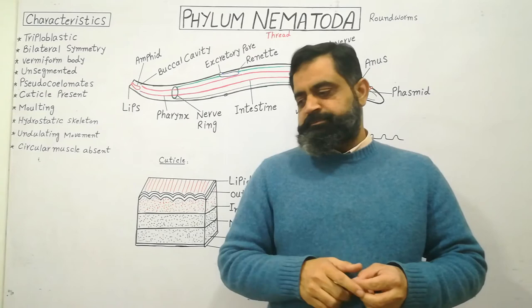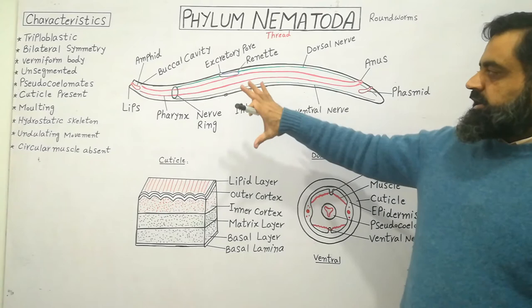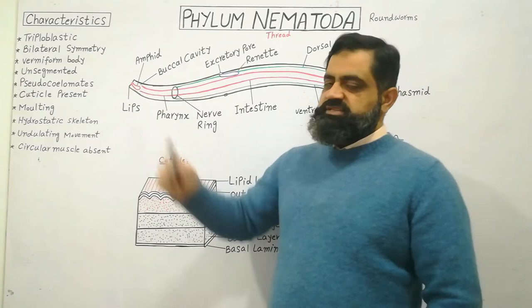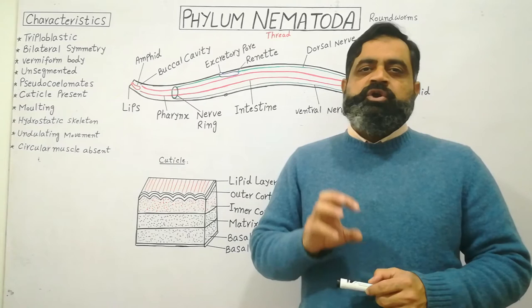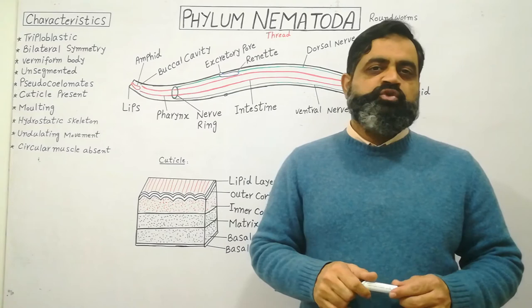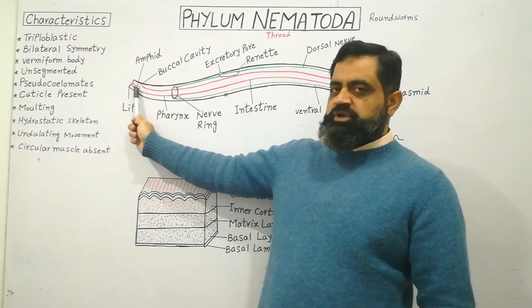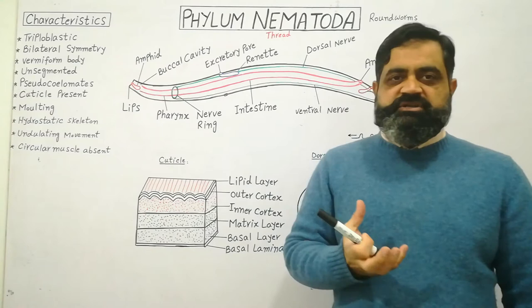Looking at the external structure, on the anterior side of the body there are small bumps known as lips. Lips are very sensitive and help the animal detect its environment and locate where it is living. Just where the lips are present, there is a deep depression inside the cuticle known as the amphid. The amphid contains chemoreceptors that help the animal detect different types of chemicals in its atmosphere.